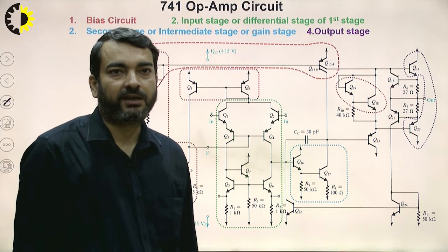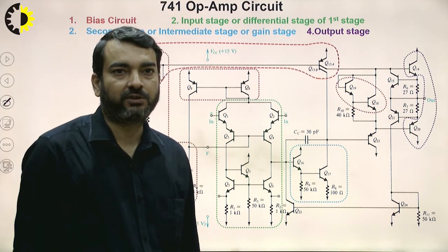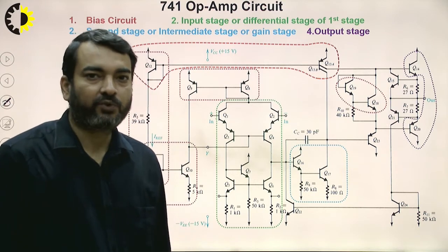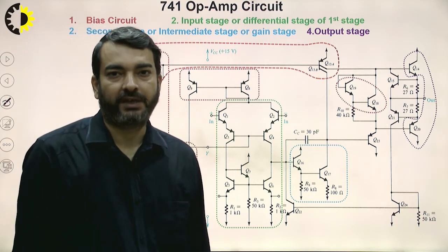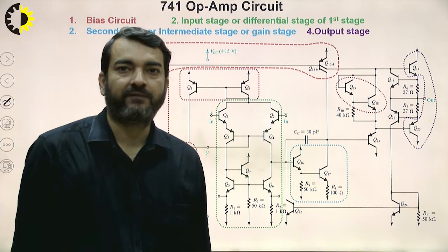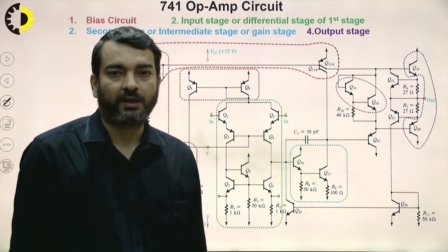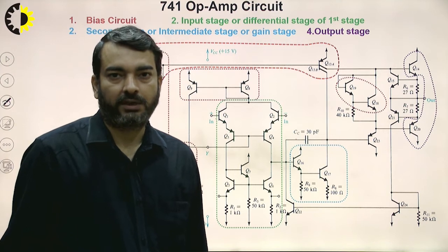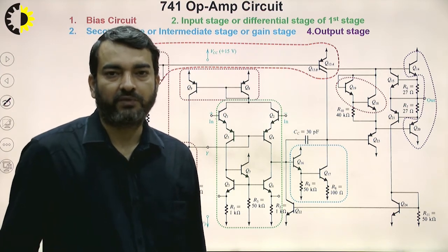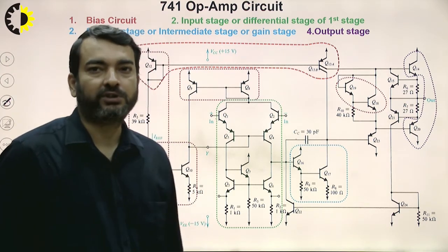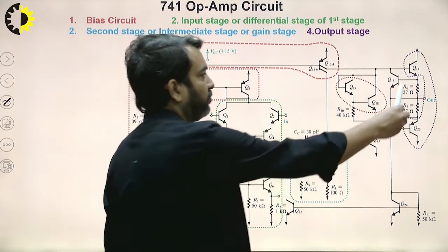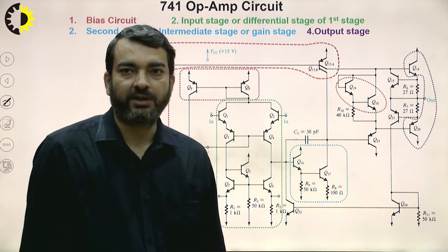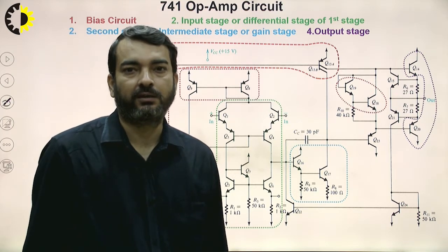The third stage is the gain stage, also called the second stage or intermediate stage. It provides the bulk of the gain realized by the 741 op-amp. Then we have to deliver the output efficiently using an output stage. Transistors Q14 and Q20 form a class AB output stage which will deliver the power.